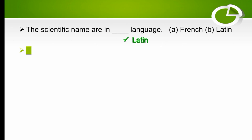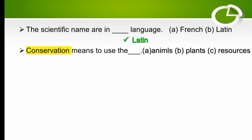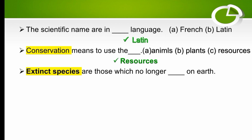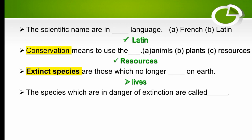Conservation means to use resources wisely — the right option is resources. Extinct species are those which no longer live on Earth. The species which are in danger of extinction are called endangered species.